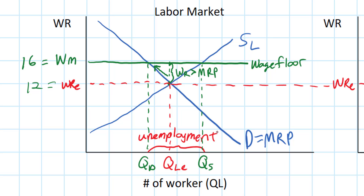An effective price floor set above the equilibrium wage rate will create unemployment in a labor market. This doesn't mean all minimum wages are bad — many employers are already paying above any proposed minimum wage, so some minimum wages are non-binding or ineffective. Only those paying the lowest wages would be affected. This is not macroeconomic unemployment; rather, it is unemployment in the particular labor market affected by the price floor.